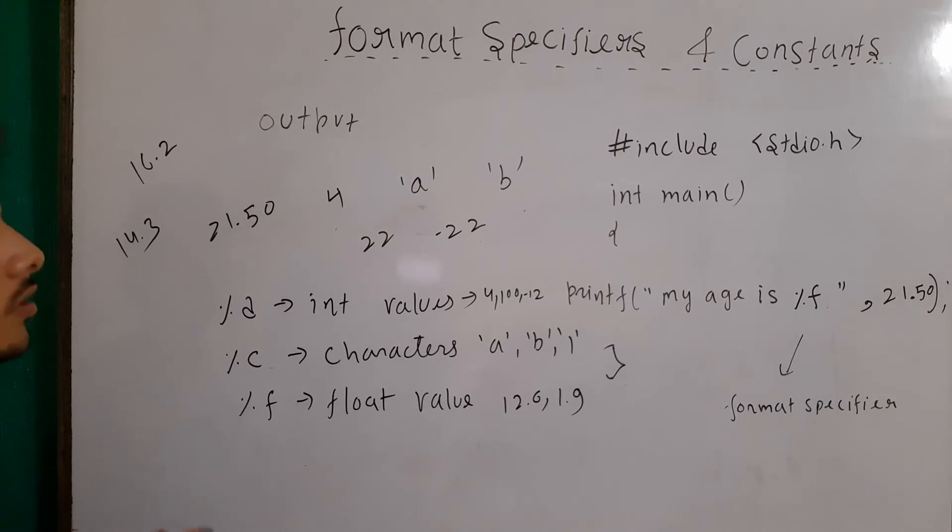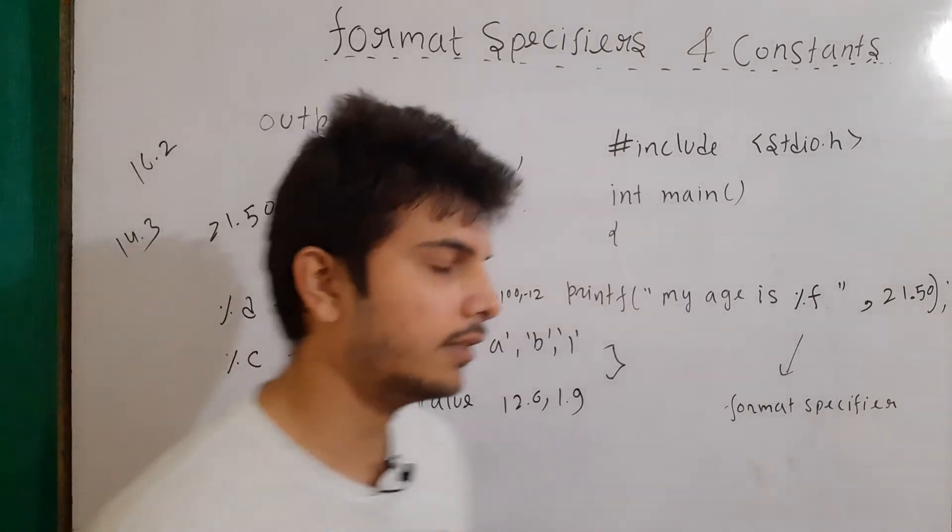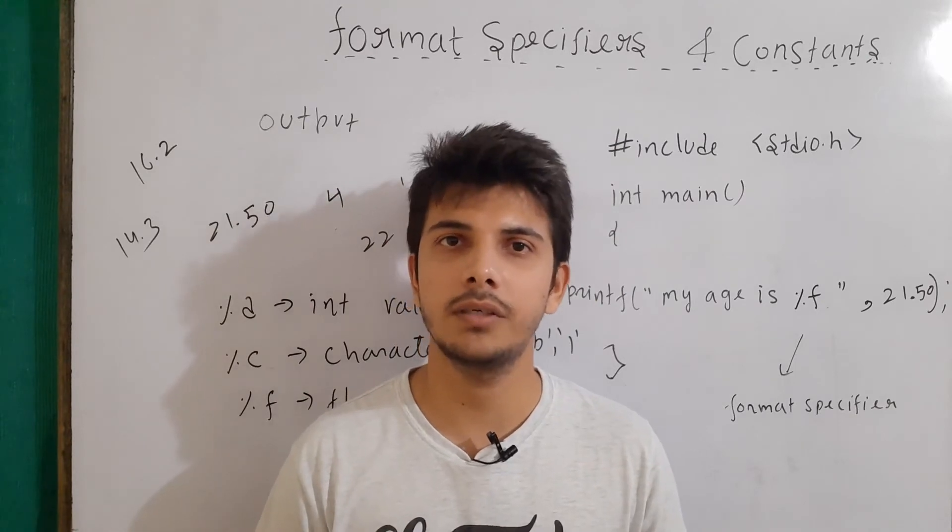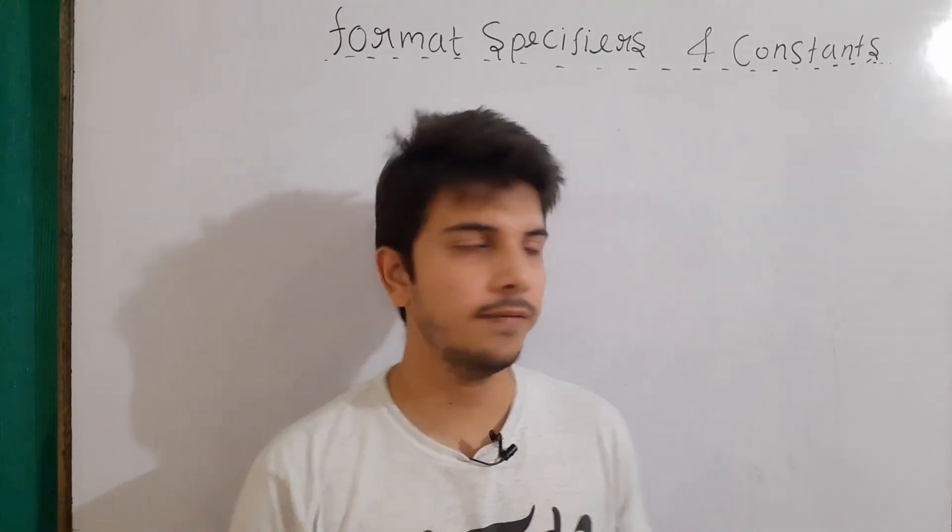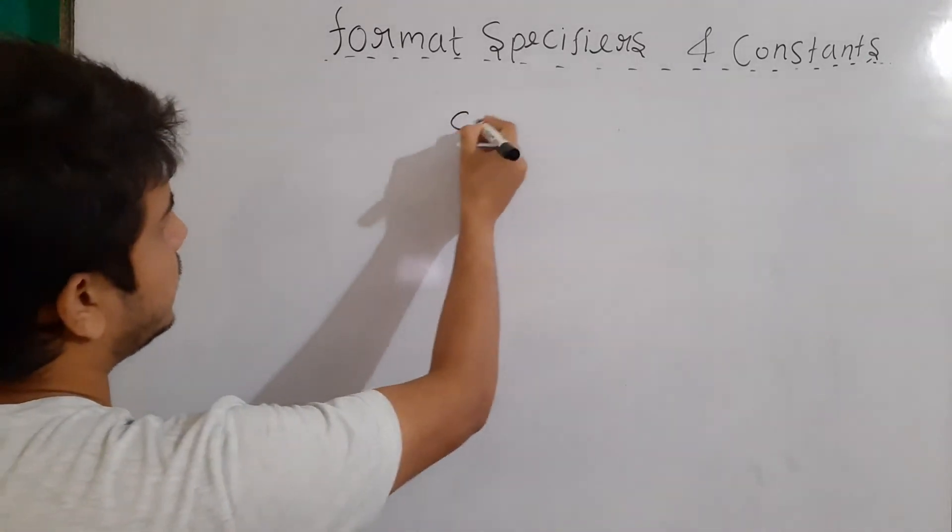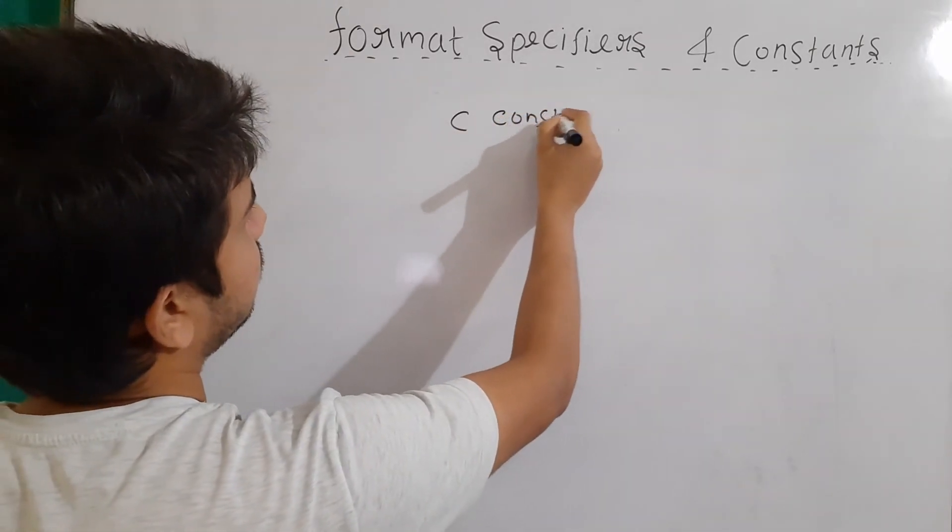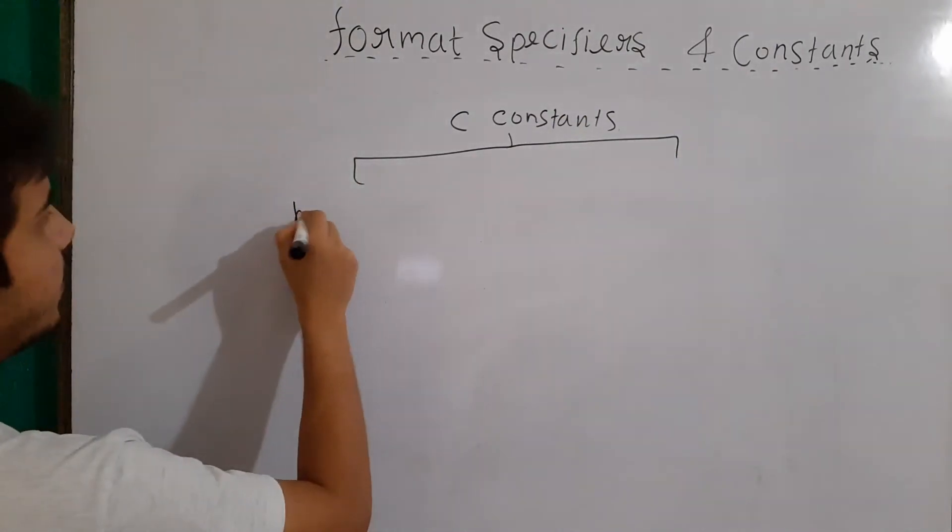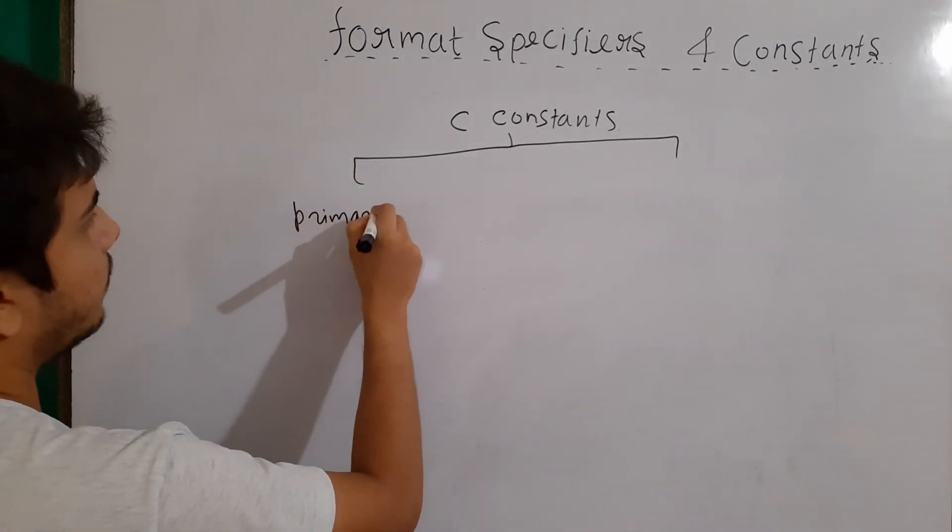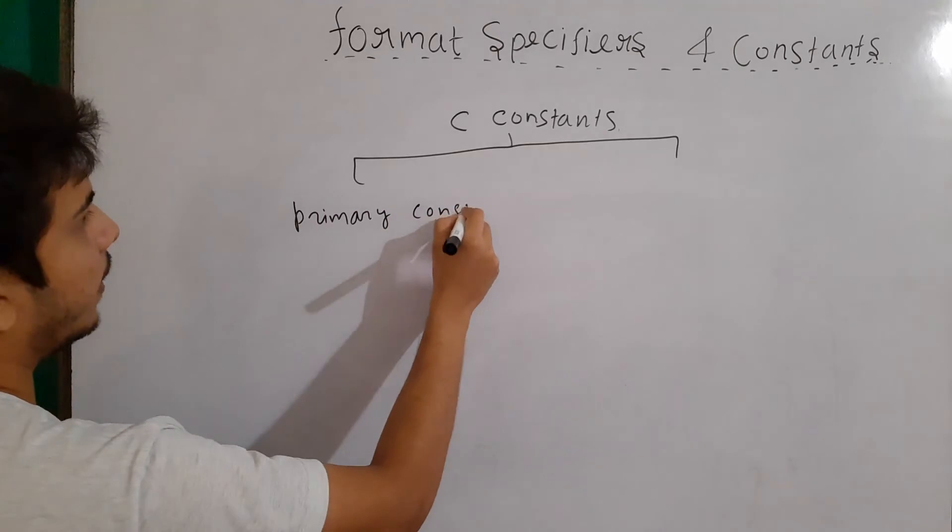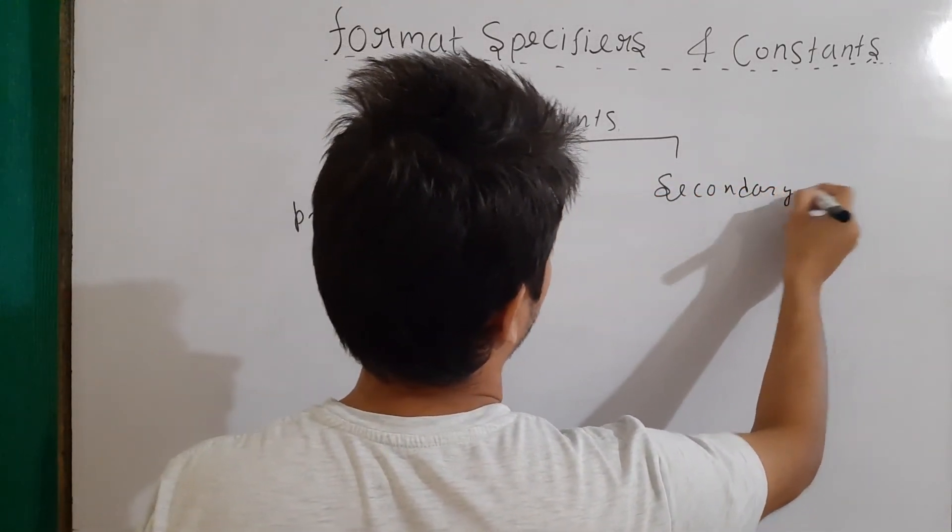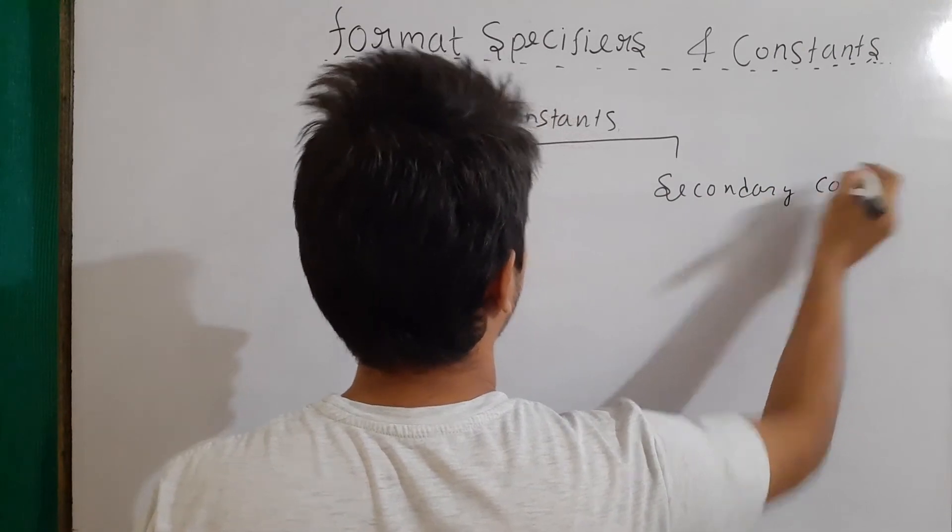Now basically constants are divided into two categories which are primary constant and secondary constant. And let's talk about it. So if we look at the division, first of all, we have C constants. And these are divided into two categories, which are primary constants and secondary constants.